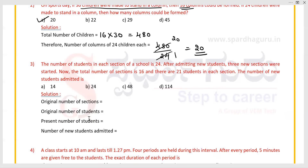Now the third problem: the number of students in each section of a school is 24. After admitting new students, three new sections were started. Now the total number of sections is 16 and there are 21 students in each section. Find the number of new students admitted. First find the original number of sections: 16 minus 3 equals 13 sections before the new admission.